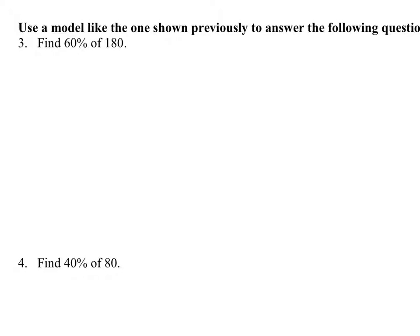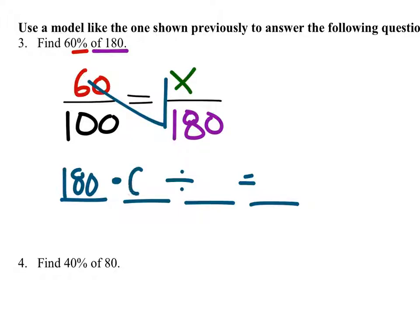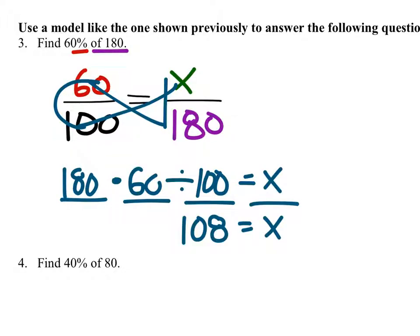They gave you guys those two models before these ones, but I'm not going to use that method. What I'm going to use is a percent proportion. This one gave us the percentage, which always goes above 100. The of is always in the denominator for the second part, 180. And then we put our X. So to solve these, we could use fish method. X down to 180, up to 60, down to the 100, and this would give us the X. 108 would be 60% of 180.